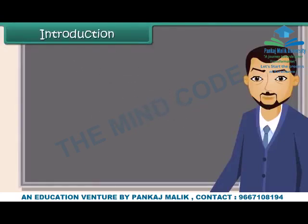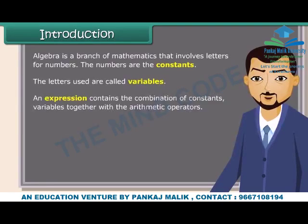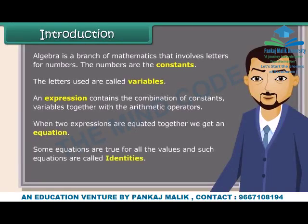Algebra is a branch of mathematics that involves letters for numbers. The numbers are the constants. The letters used are called variables. An expression contains the combination of constants and variables together with the arithmetic operators. When two expressions are equated together, we get an equation. Some equations are true for all the values, and such equations are called identities.